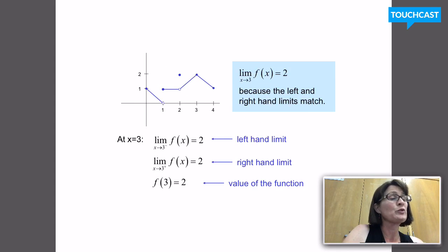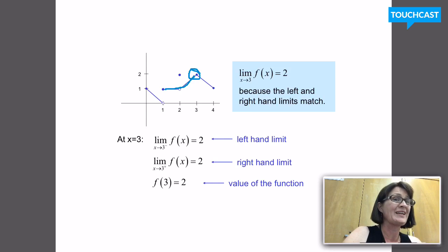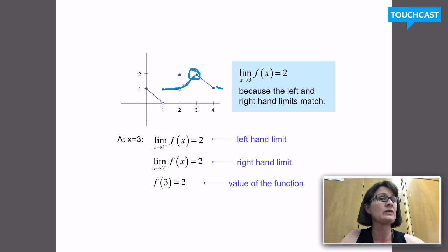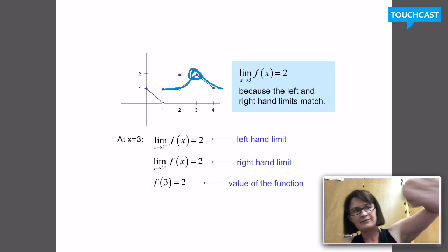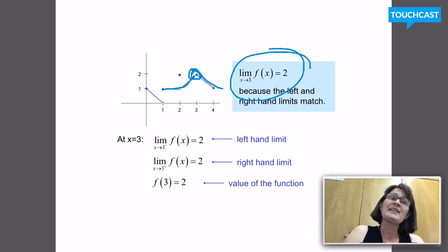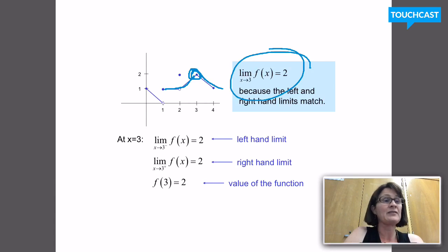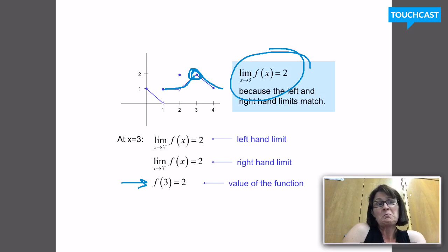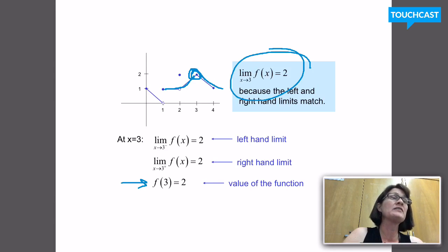The limit as x approaches 3 from the left — I'm coming toward x equals 3 and I seem to be approaching the y value of 2. To find the limit as x approaches 3 from the right, I walk on this graph toward x equals 3 starting from positive infinity, and I seem to get to the same place where the y value is 2. So the limit as x approaches 3 of f of x equals 2. It happens to be that f of 3 is also 2 — that's a coincidence, and it doesn't matter in our discussion of what the limit of f is at x equals 3.